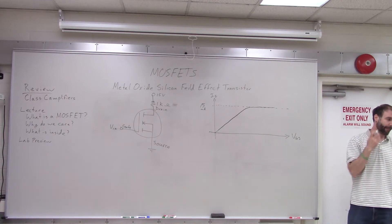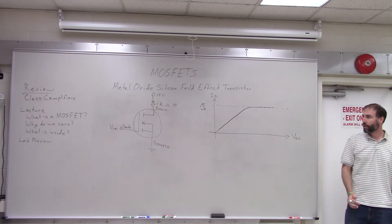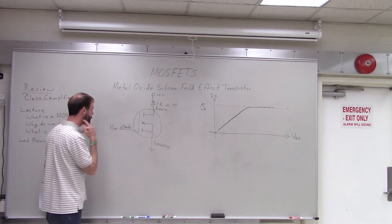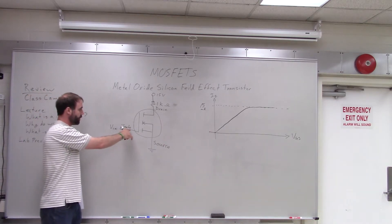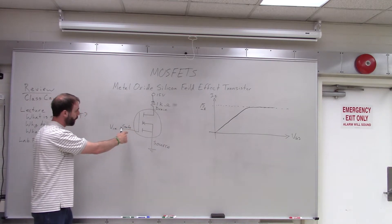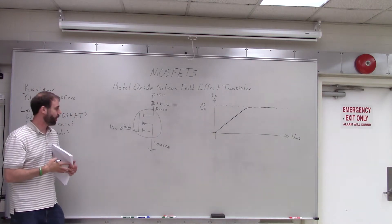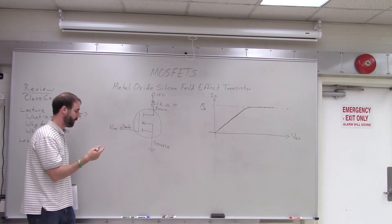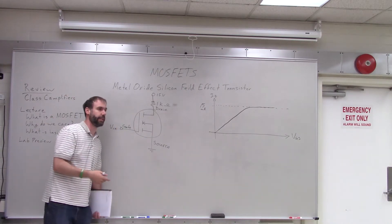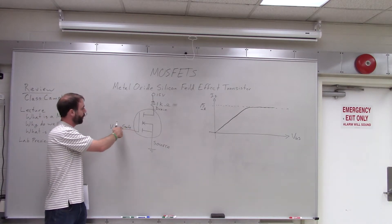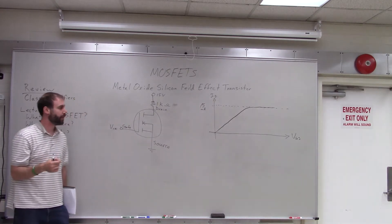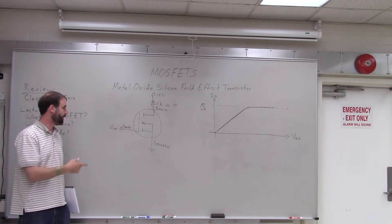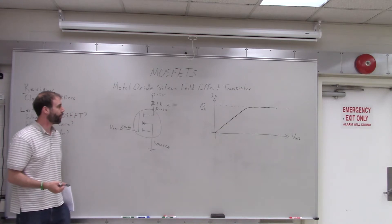A student asked whether the current won't start flowing until 0.7 volts, as with BJTs. With BJTs we needed 0.7 volts between the base and emitter to allow current to flow — because there was essentially a diode effect there. But since current is not flowing from the gate to the source in a MOSFET, you don't have that 0.7 volt threshold to overcome. So really, as soon as you start applying voltage, you should see some current start to flow. That's another reason these devices are preferred over BJTs.